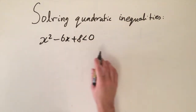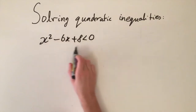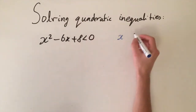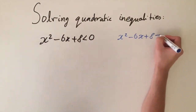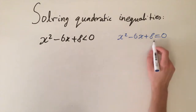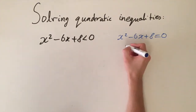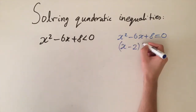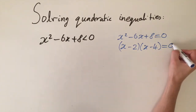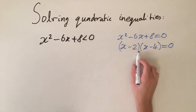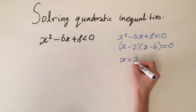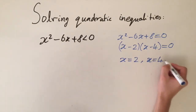Let's do x squared minus six x plus eight is less than zero. This is the quadratic inequality we want to solve. Just as before, we look at the critical equation — we replace the inequality sign by an equality. We want to solve it to find the critical values. This quadratic factorizes quite nicely: we can write it as x minus two times x minus four. Setting each bracket equal to zero, we get x is equal to two and x is equal to four. These are the critical values.